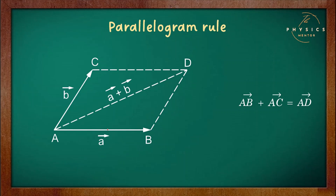To explain the parallelogram rule in detail, consider two vectors, vector A and vector B, arranged as the two adjacent sides of a parallelogram as shown in the figure. Here, the common tail of vector A and vector B is at point A. According to the parallelogram rule, the sum of vector A and vector B is given by the diagonal of the parallelogram, that is AD. Therefore, we can write vector AB plus vector AC equals vector AD, where vector AD is the sum of vector A and vector B.